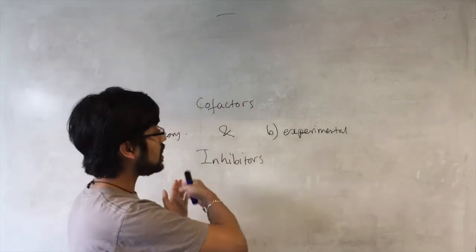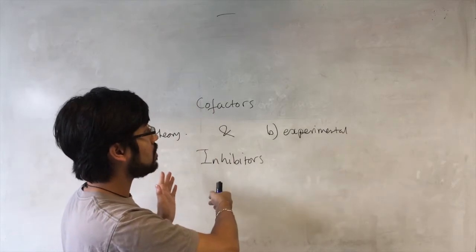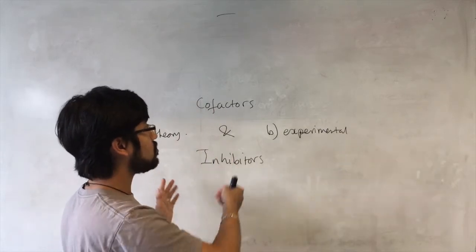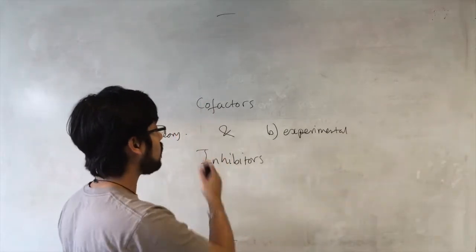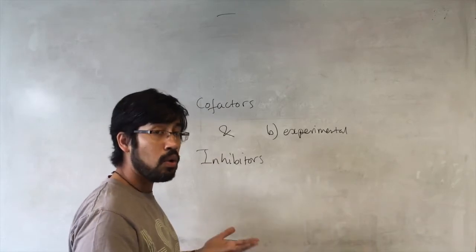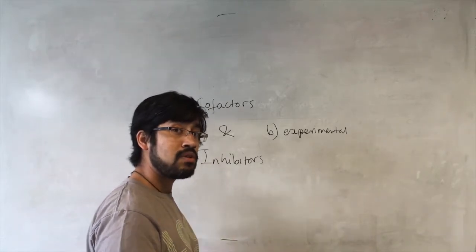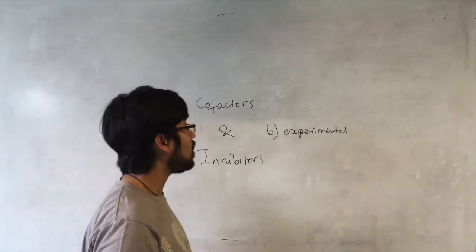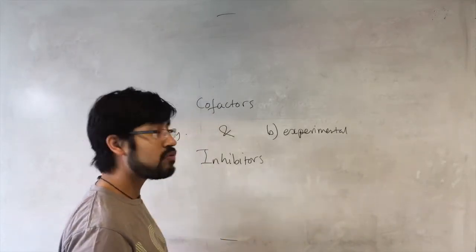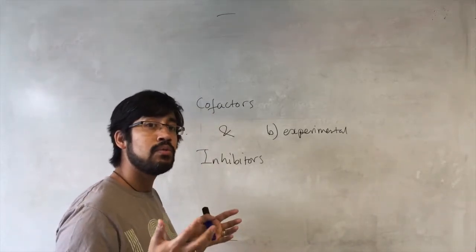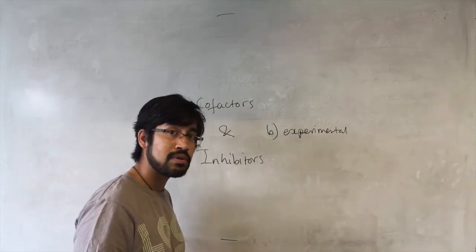You could get a question about some experimental results — maybe an unknown substance which might be a cofactor or an inhibitor. How can you look at some data, looking at the rate of an enzyme in the presence of an unknown substance, and say if it's a cofactor or an inhibitor? Or if the examiners are really mean, they might ask you to design an experiment to test whether something is a cofactor or an inhibitor.